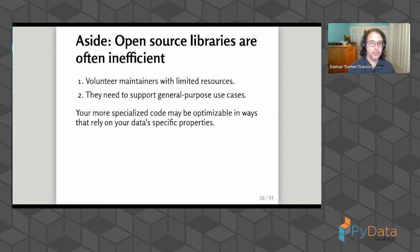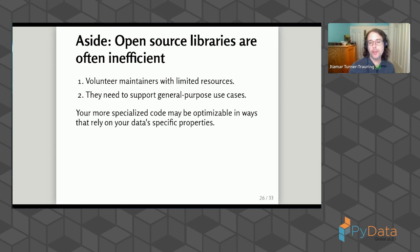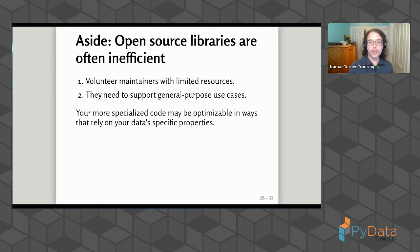As an aside, mentioning that the version in Scikit-image is slow is not a criticism of its maintainers. The people working on these libraries do so in their spare time with very limited resources. In academia, you don't get credit for open source work much of the time. They also support general-purpose use cases, which can work against performance. Your code is specialized, so you may be able to optimize for your specific data and its properties.